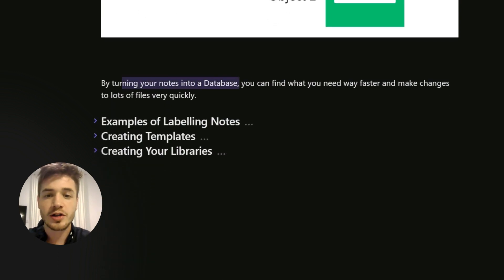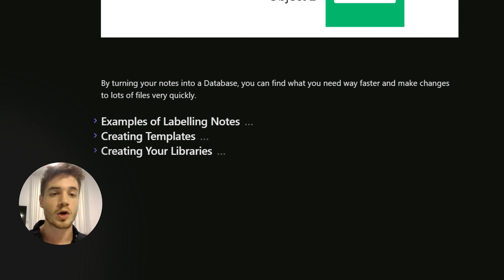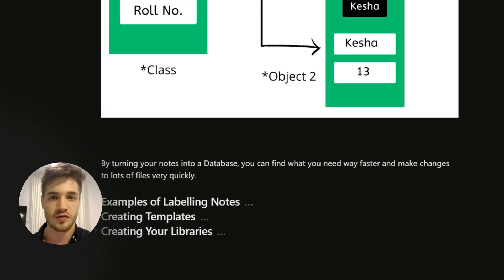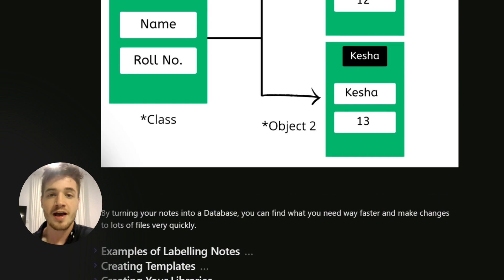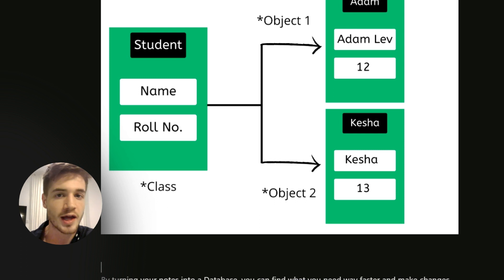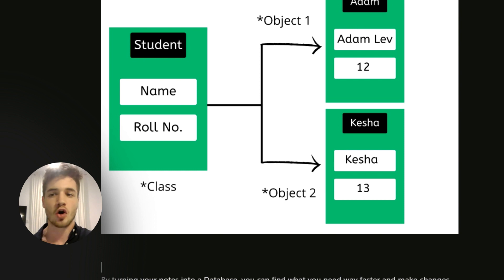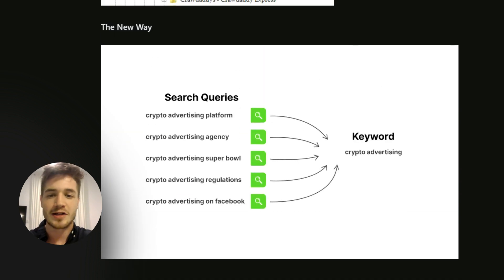By turning your notes into a database, it allows you to find what you need much faster and make changes to lots of files quickly. The cool thing with Dataview is that it lets you sort your files by the time or date you created them, or by specific information within the files — overall it just makes it so much easier to manage a large amount of notes.